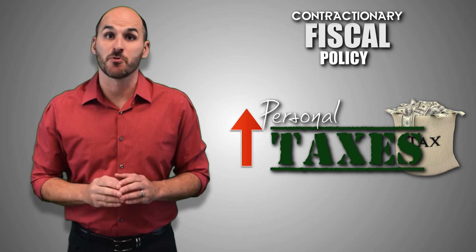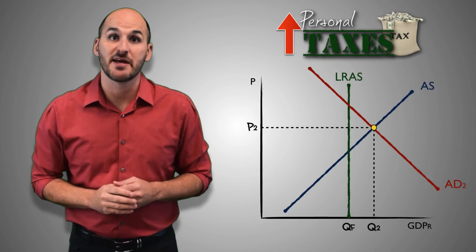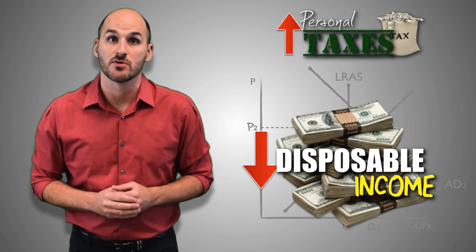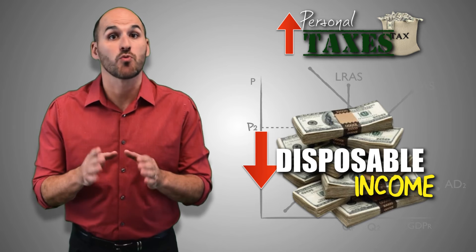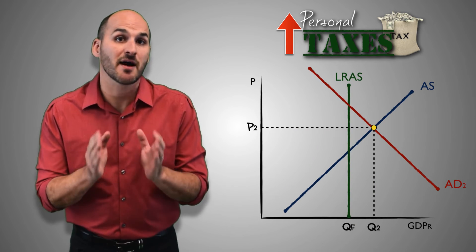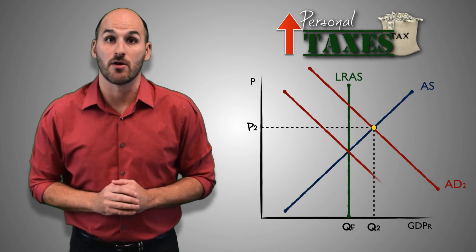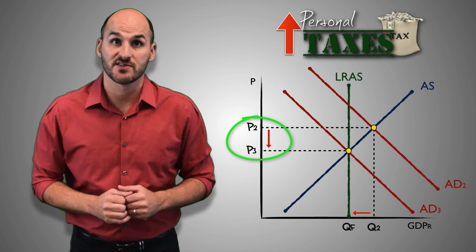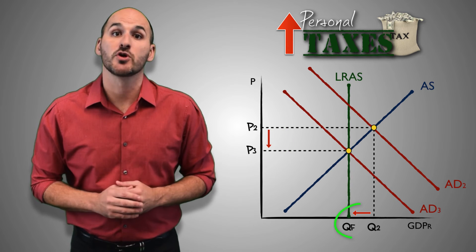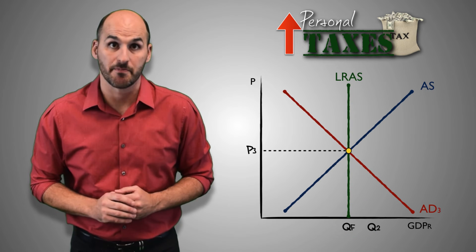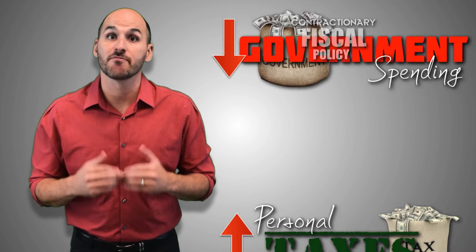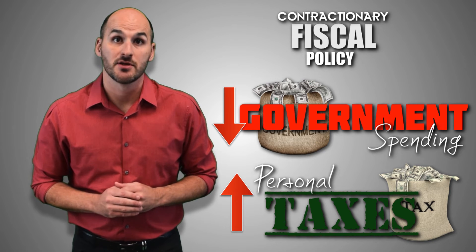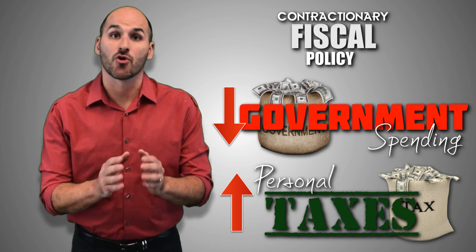Increasing personal taxes takes disposable income away from consumers, which serves to reduce consumer spending in the aggregate economy. With less income to spend, consumers simply don't have the ability to buy as many goods and services as they used to, while others are unwilling to purchase at the same rate now that their wallets are a little lighter. Consumers simply stop buying because they have less income to spend and consumerism slows down, causing aggregate demand to decrease. As aggregate demand slows, price levels will decrease and harmful inflation will be reduced. This will cause real GDP contraction and the economy will return to long-run equilibrium. Of course, government could also use a combination of both policies to close an inflationary gap, since both share the goal of reducing real GDP output and reducing inflation.